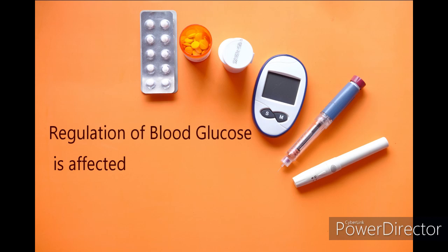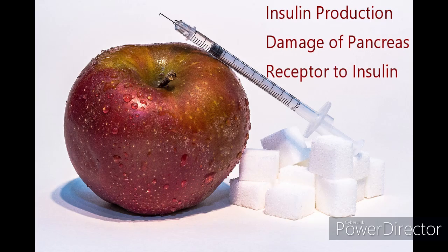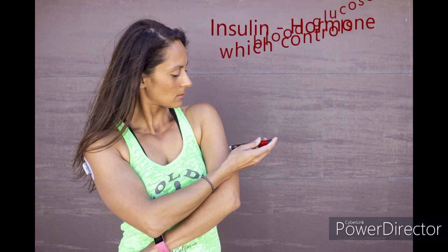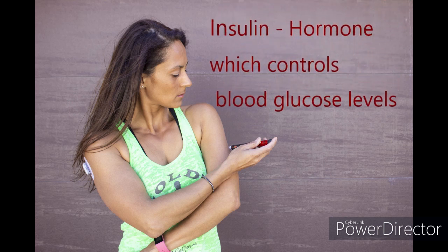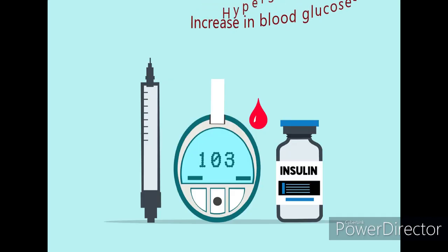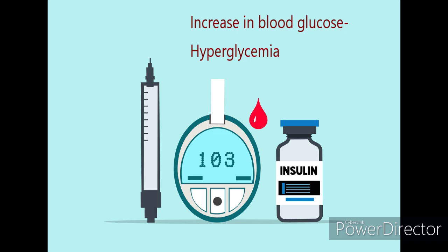What is diabetes mellitus? Diabetes mellitus is a disease where the regulation of blood glucose is affected. There can be different factors: a deficiency of insulin production, damage to the pancreas which produces insulin, or a defect in the receptor that binds insulin. Insulin is a hormone that controls glucose regulation. When we eat, glucose must be broken down to give energy. If it is not broken down, glucose accumulates in the blood, leading to a rise in blood glucose level called hyperglycemia — the classic hallmark of diabetes.